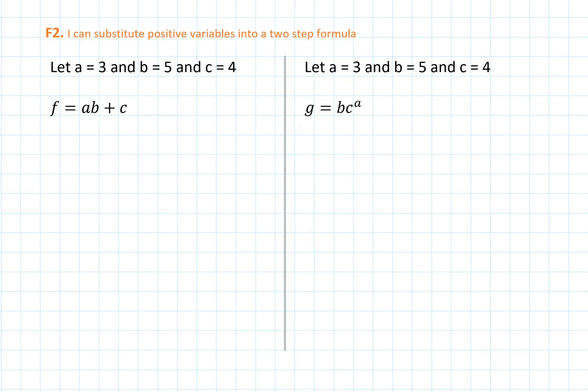Moving on to some slightly more complicated examples, where we have 3 variables to account for: a, b, and c. The formula is f equals ab plus c. ab here just means a times b. If we substitute, we find that the first part will be 3 times 5, and then we add 4 to that.